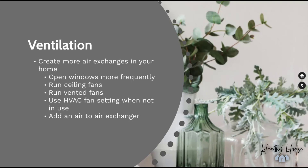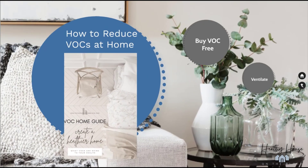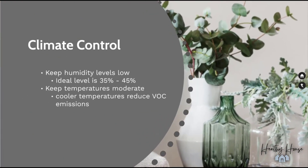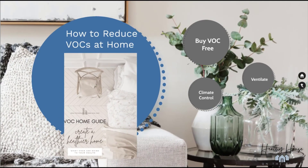Creating more and more air exchanges in your home is the best way to dilute toxin-concentrated air. Another strategy is climate control: warm air with high humidity creates an environment where VOCs will off-gas at a much higher and more frequent rate. Keeping indoor relative humidity between 35 and 45 percent is ideal — not only for VOC emissions, but also for mold and dust mite control.